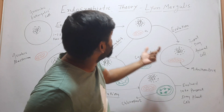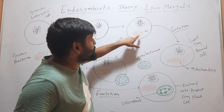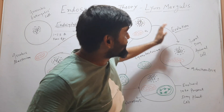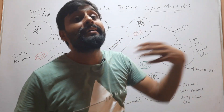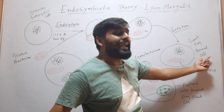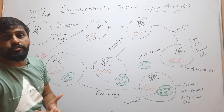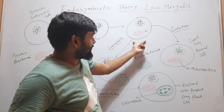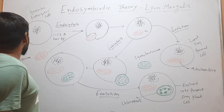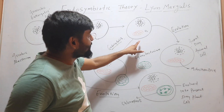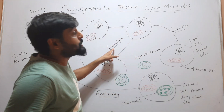So this is how an aerobic bacterium became mitochondria: first it was engulfed, then it became part of that cell, utilizing oxygen so that food is broken down in the presence of oxygen. By the time it evolved into mitochondria, this cell then ultimately evolved into present-day animal cells. Now, how did chloroplast evolve?